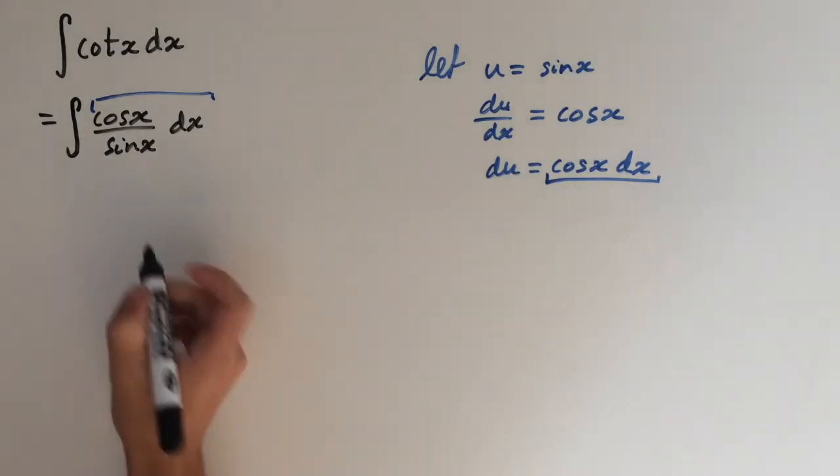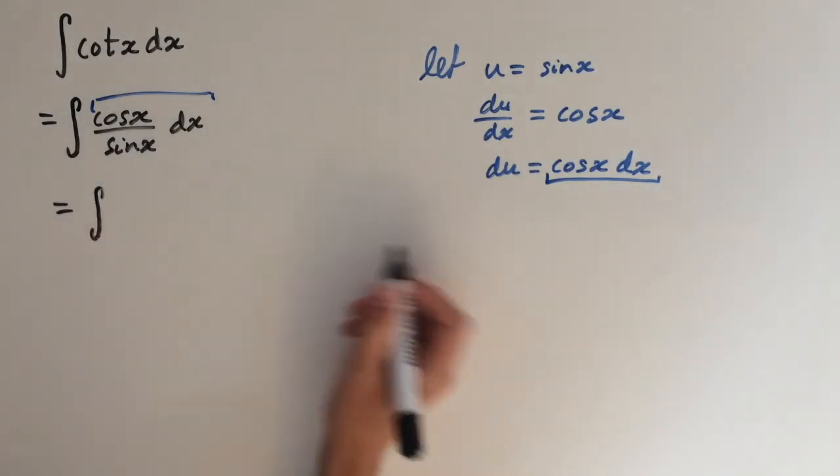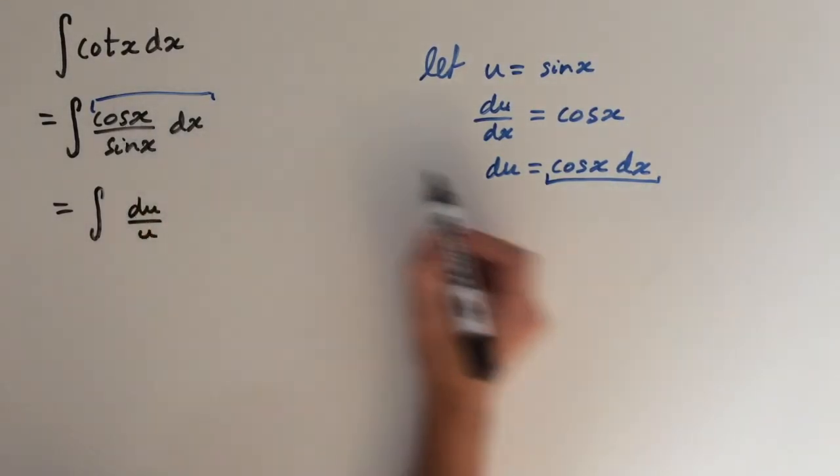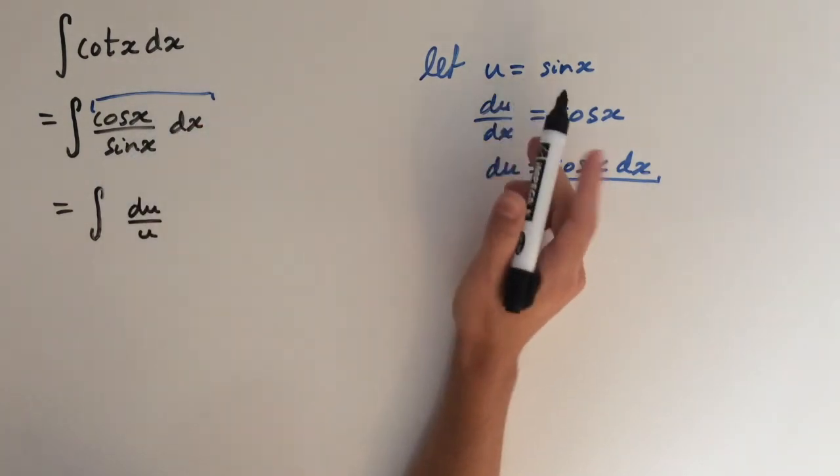So this integral is just going to simplify to integral of du over u. Because we substituted here for du on top and under here we substituted for u.